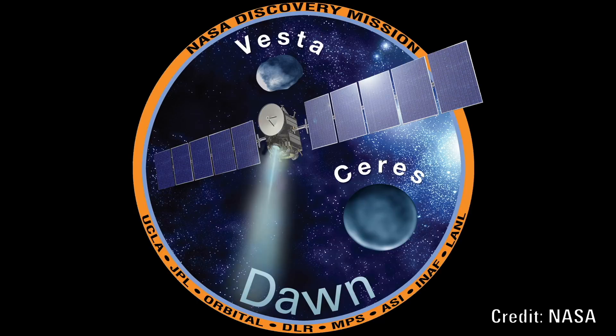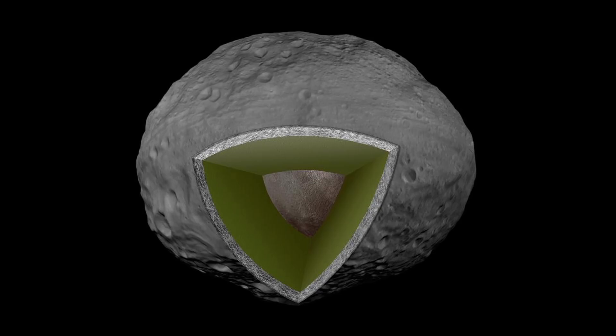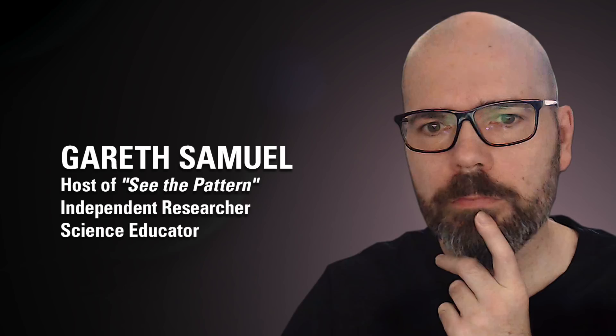In 2011, NASA's Dawn mission arrived to study the asteroid. In 2012, an analysis of its shape and gravitational field concluded that it was not in hydrostatic equilibrium. They speculate that it has a more dense core at the center.